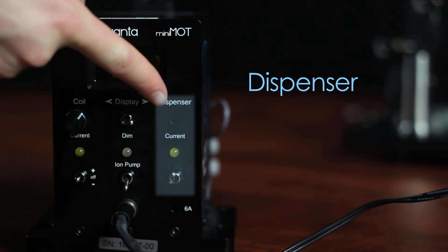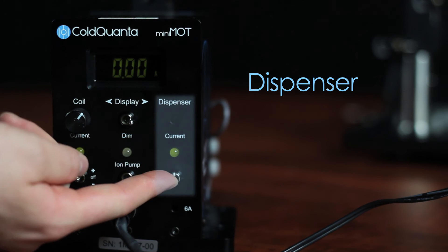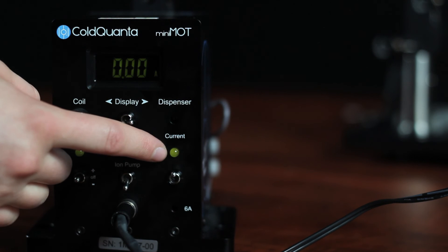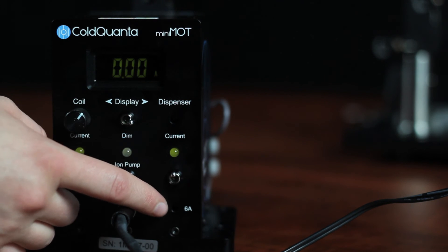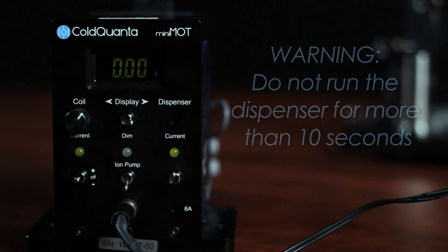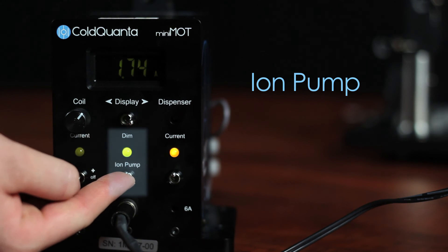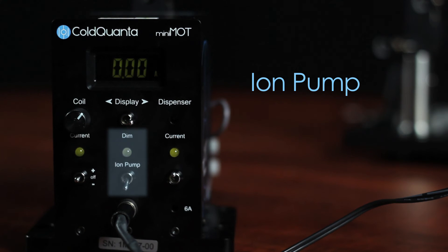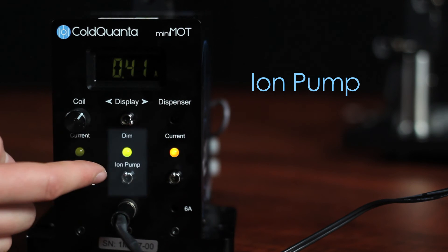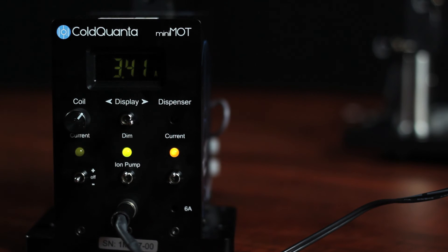To the right is a recessed trim pot to change the dispenser current. The switch below turns the dispenser on and off, and the green light indicates power. At the bottom is a recessed button to run 6 amps through the dispenser. This can be used to rapidly fill the cell with extra rubidium. Hold the button for 5 to 10 seconds. Running the dispenser at 6 amps for more than 10 seconds can damage the cell. In the middle is the ion pump on-off switch. Note that the dispenser will only function if the ion pump is on.